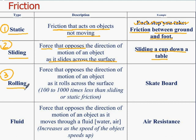The third type is rolling friction — a force that opposes motion as an object rolls across a surface. Rolling friction is much less than sliding friction because there is less surface contact at a time. For example, a skateboard rolling on its wheels has rolling friction, whereas sliding the deck without wheels would be sliding friction.